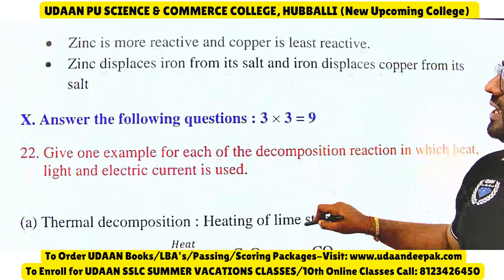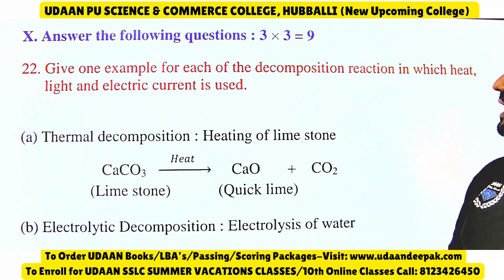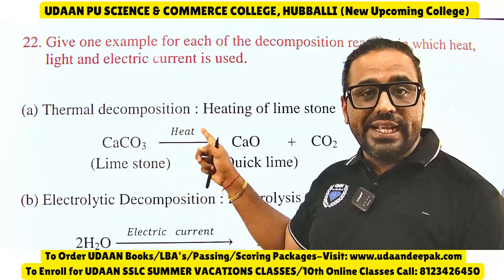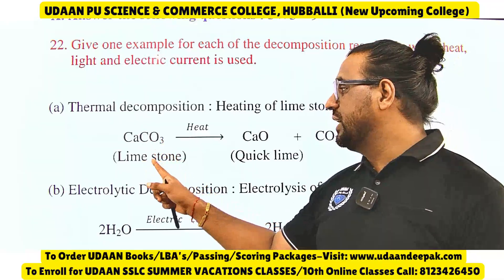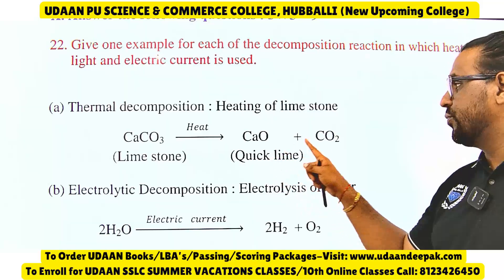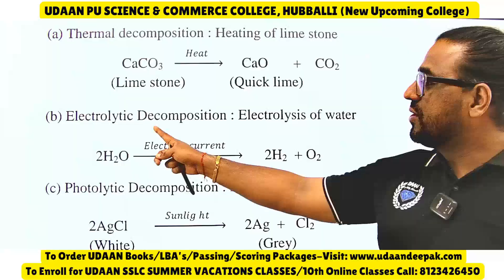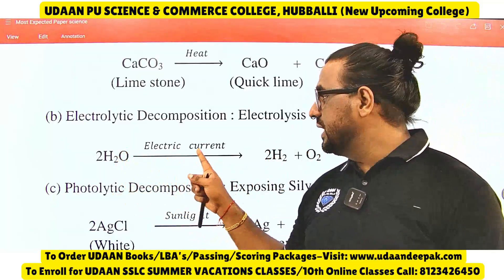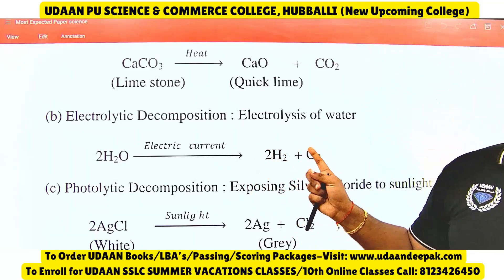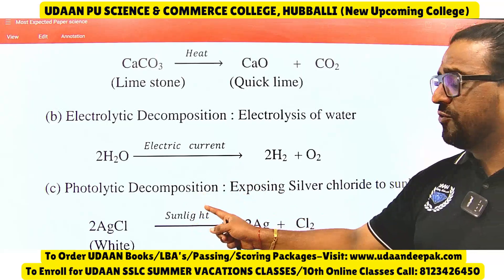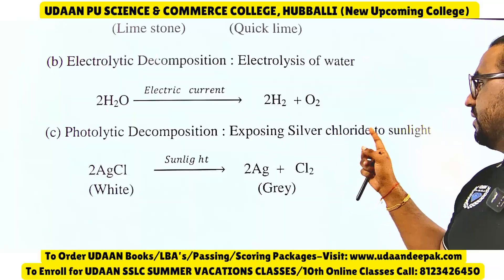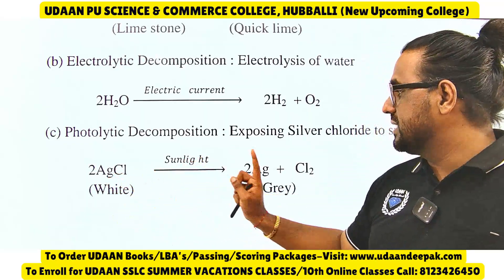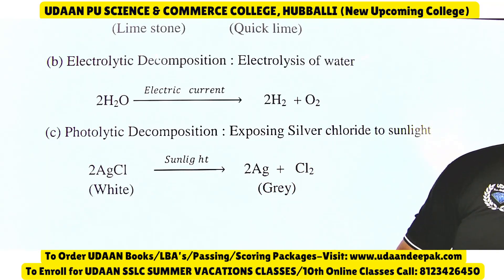Give one example each for decomposition reactions in which heat, light, and electric current are used. Heat — thermal decomposition: calcium carbonate (limestone) when heated gives calcium oxide (quicklime) and carbon dioxide. Electricity — electrolytic decomposition: electrolysis of water decomposes it into 2H2 plus O2. Light — photolytic decomposition: exposing silver chloride to sunlight causes it to decompose into silver and chlorine; silver chloride is white and turns gray on exposure to sunlight.